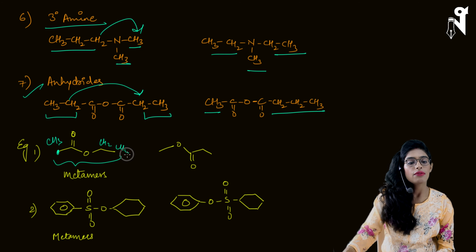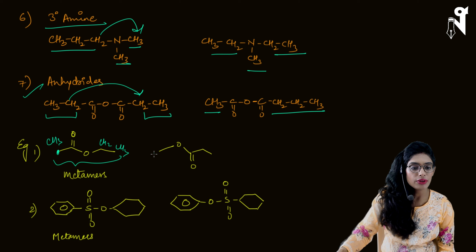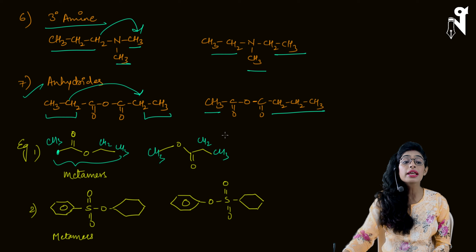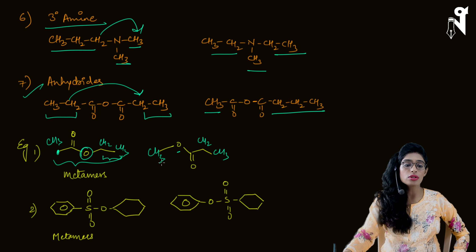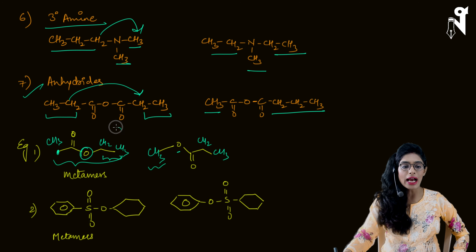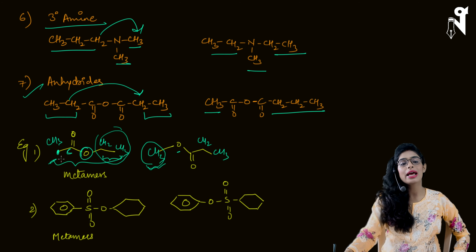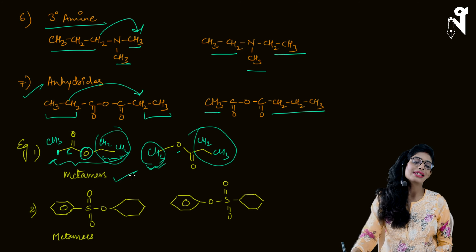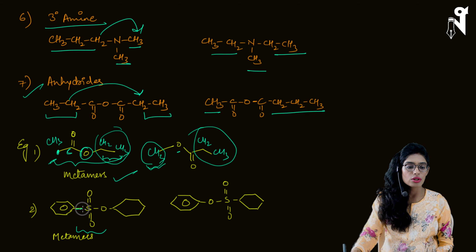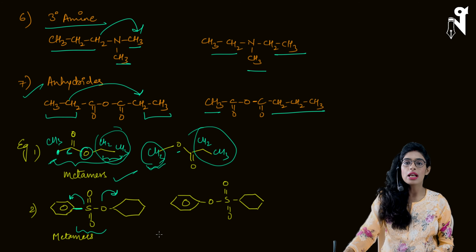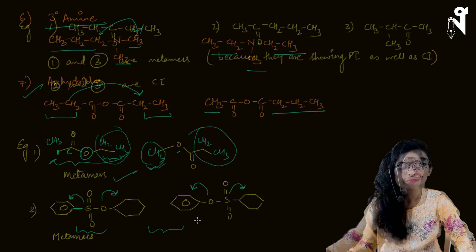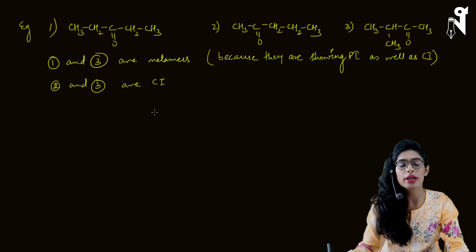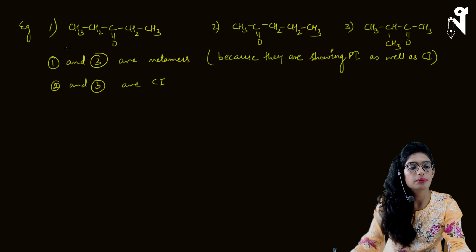Look at this important competitive exam example: in one compound, oxygen is attached to an ethyl group and carbon has a methyl group. In the rearranged compound, oxygen is attached to a methyl group and carbon has an ethyl group. It looks similar but the R groups attached to the functional group have swapped — these are metamers. Similarly for a sulfonate with benzene and cyclohexane: if sulfur is attached to benzene and oxygen to cyclohexane, vs. sulfur to cyclohexane and oxygen to benzene — R groups change, so these are metamers.